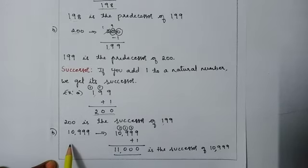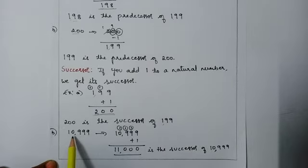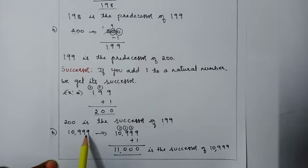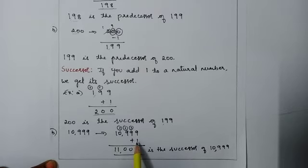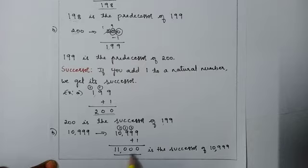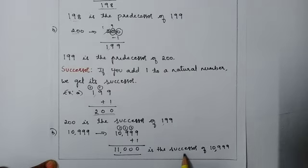Let us consider one more example: 10999. To find the successor of this number we will add 1. When we add 1 we will get 11000. So 11000 is the successor of 10999.